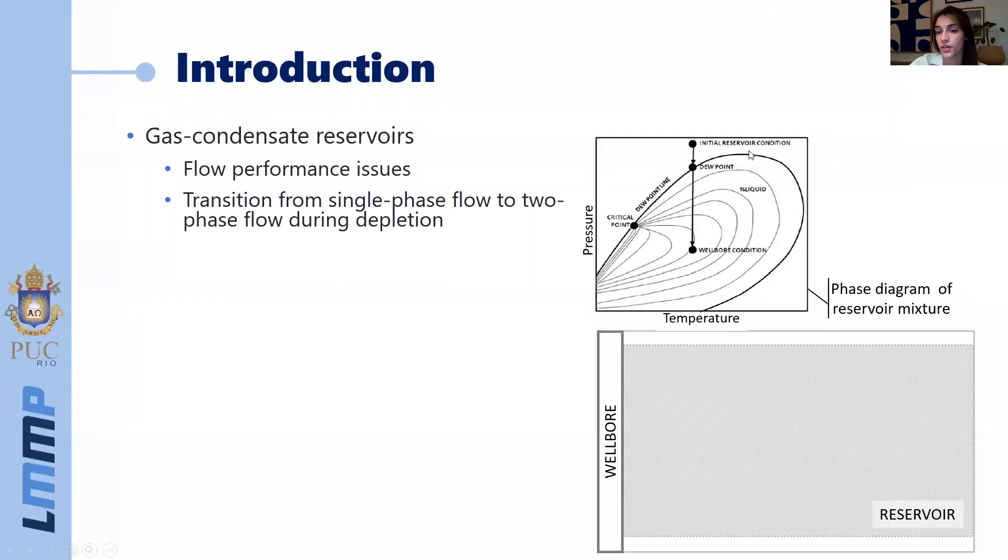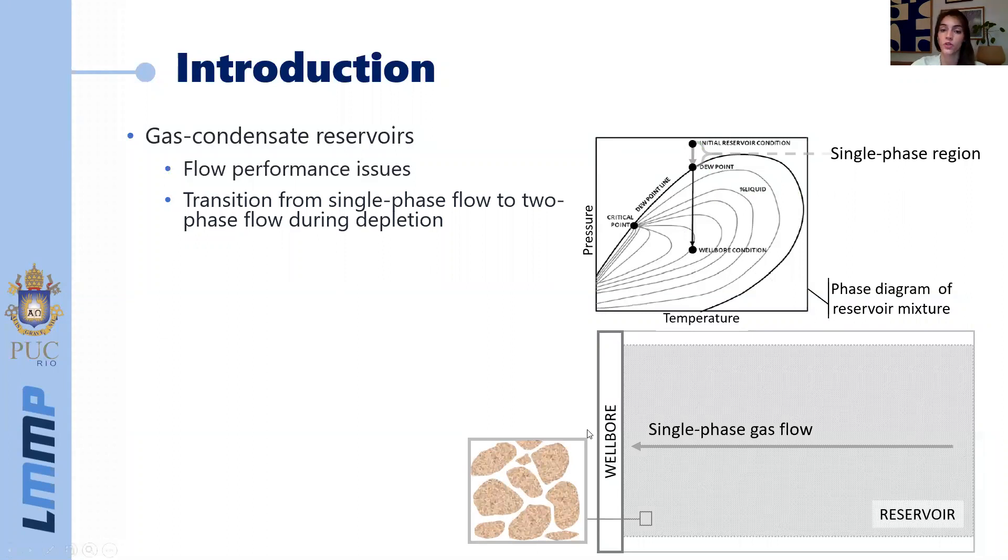Here we have a phase diagram of the reservoir mixture and the green arrow represents the reservoir isothermal depletion. So in the beginning of the production, we still have relatively high pressure levels and we are in the single phase region where there's only gas flowing from the reservoir to the wellbore.